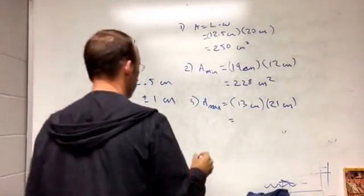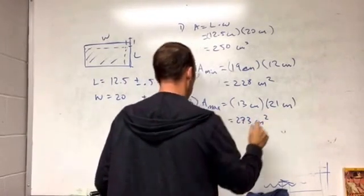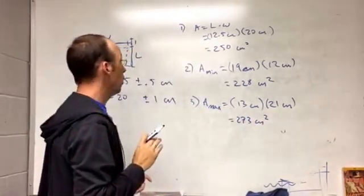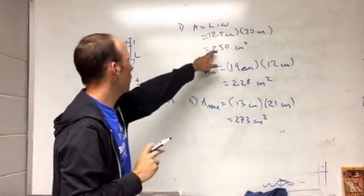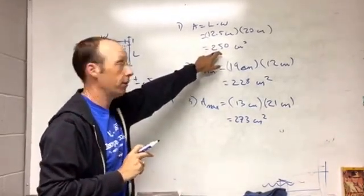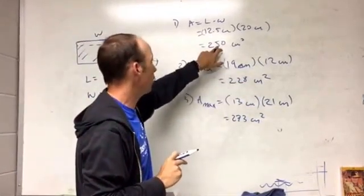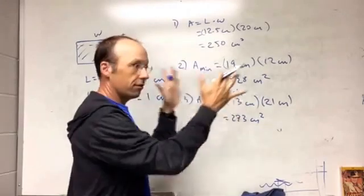So 273 centimeters squared. Okay, so now I want to report the area with uncertainty. So here's my area, but what am I going to get for the uncertainty? So this might be further from the average than this, so what I do is actually average this.